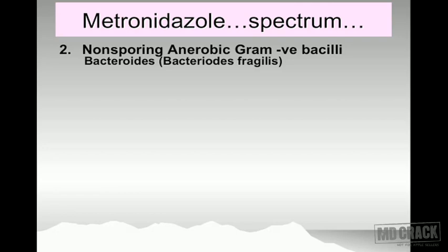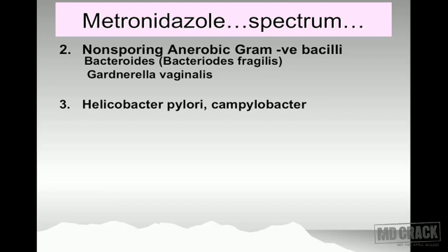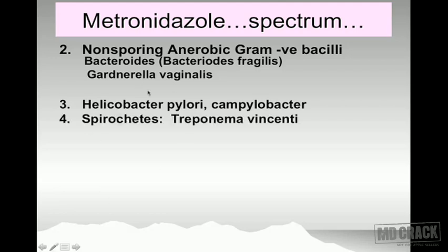The spectrum also includes non-sporing anaerobic gram-negative bacilli, including Bacteroides fragilis and Gardnerella vaginalis. The next important organism inhibited is H. pylori and Campylobacter. Since the advent of the concept that peptic ulcer is produced by H. pylori, the management has become a triple regimen — two anti-H. pylori antimicrobial agents plus one proton pump inhibitor. One of those two agents could be metronidazole.